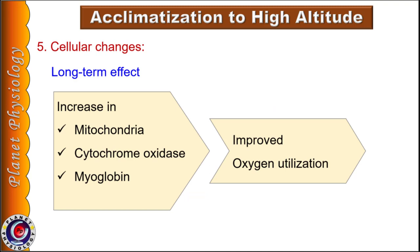Changes at the cellular level are also long-term adaptive responses to hypoxia. With prolonged exposure, the number of mitochondria within cells and the amount of cytochrome oxidase enzyme increase, improving oxygen utilization. There is also increase in myoglobin content, increasing the oxygen reserve available. These adaptive changes increase the cellular efficiency to utilize oxygen.